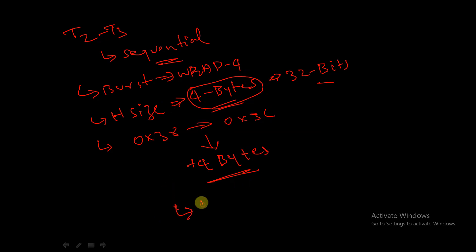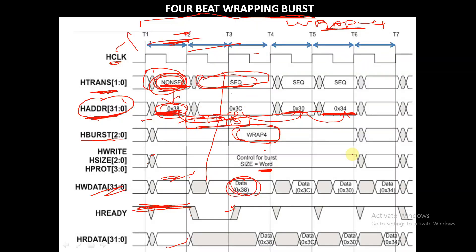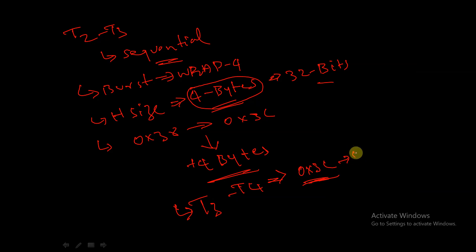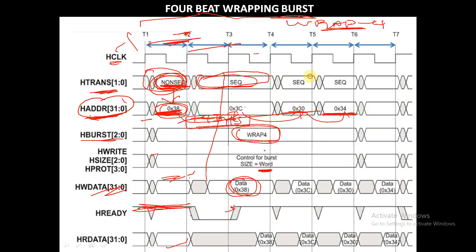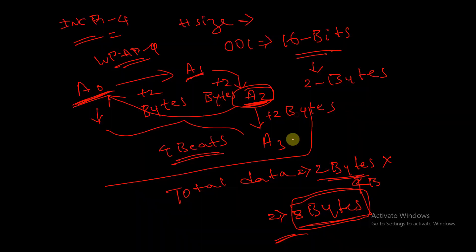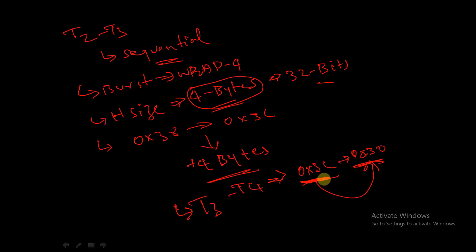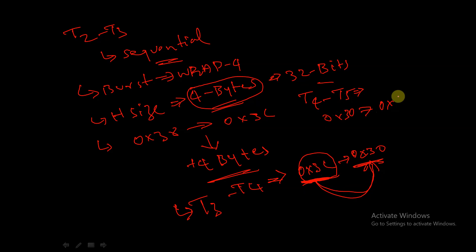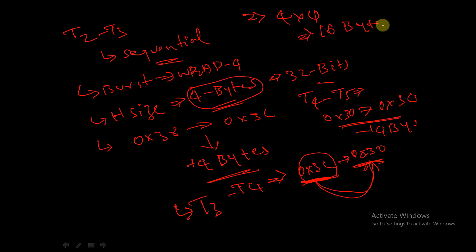In clock cycle T3 to T4, the address increments from 0x3C and wraps back to 0x30 — it returns to the initial address 0x30 because it has reached its maximum address limit at 0x3C. In clock cycle T4 to T5, it increments from 0x30 to 0x34, incrementing by 4 bytes. So the total amount of data transferred is 4 × 4, that is 16 bytes.